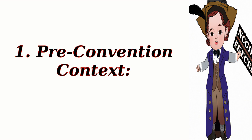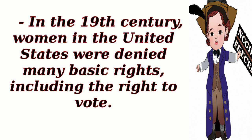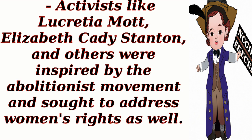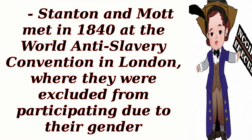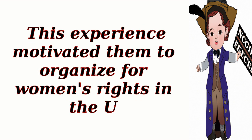1. Pre-Convention Context. In the 19th century, women in the United States were denied many basic rights, including the right to vote. Activists like Lucretia Mott, Elizabeth Cady Stanton, and others were inspired by the abolitionist movement and sought to address women's rights as well. Stanton and Mott met in 1840 at the World Anti-Slavery Convention in London, where they were excluded from participating due to their gender. This experience motivated them to organize for women's rights in the U.S.